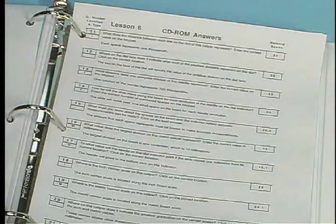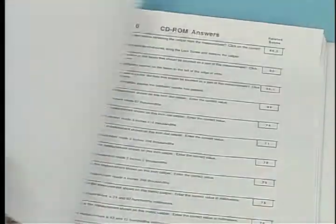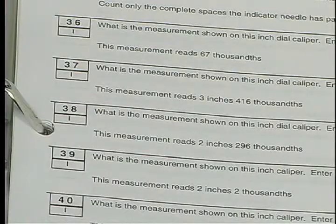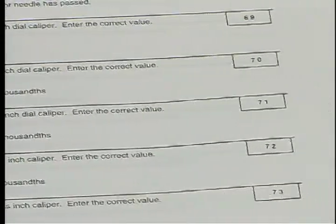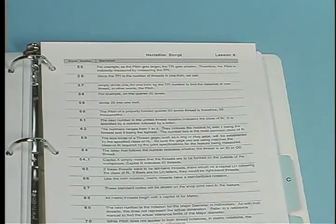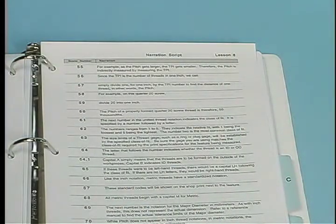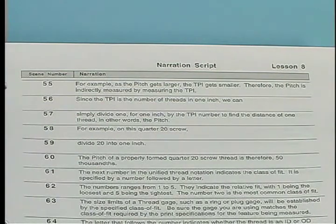If a person is having problems with a particular group of questions, the instructor can use the leader's guide as a reference. The answers to the CD-ROM questions in the leader's guide are all cross-referenced to scene numbers within the lesson video. The narration scripts for each lesson are included in the manual as well. The instructor or supervisor can quickly locate the source of the answer from the instruction and assist the student with their problem.